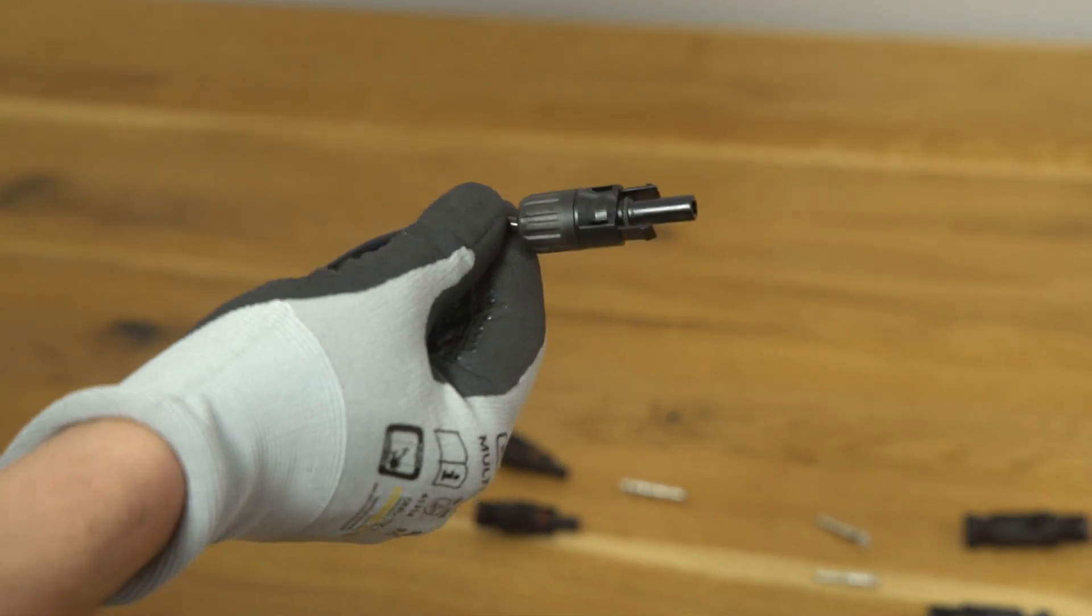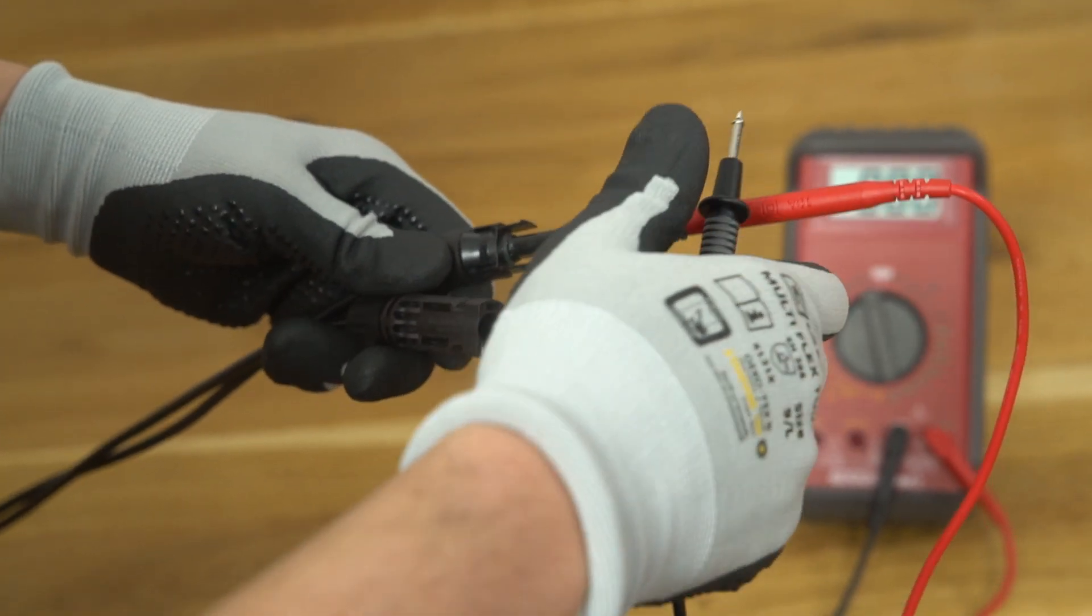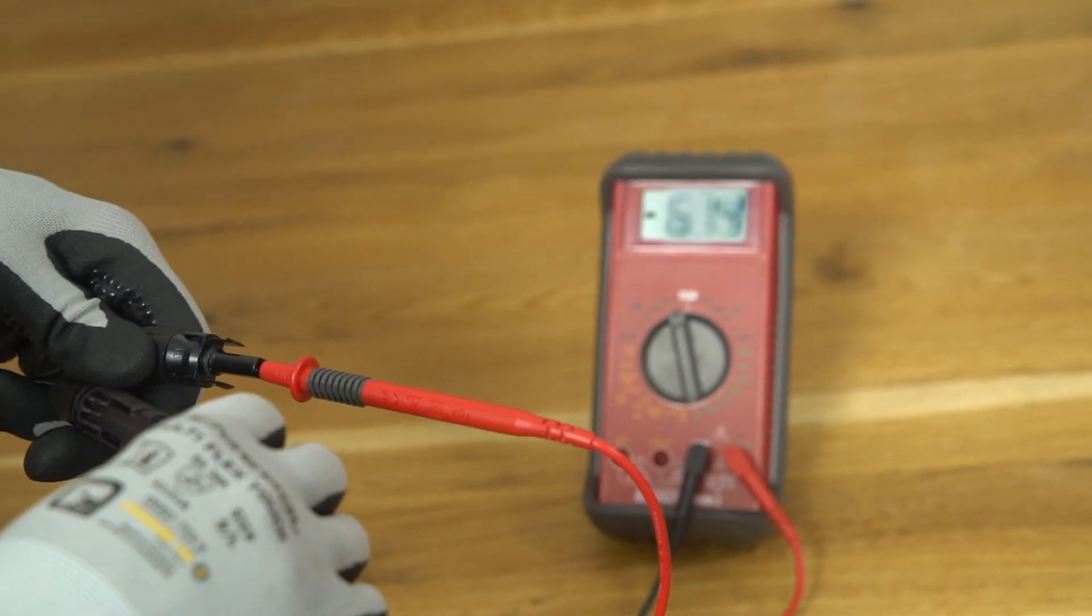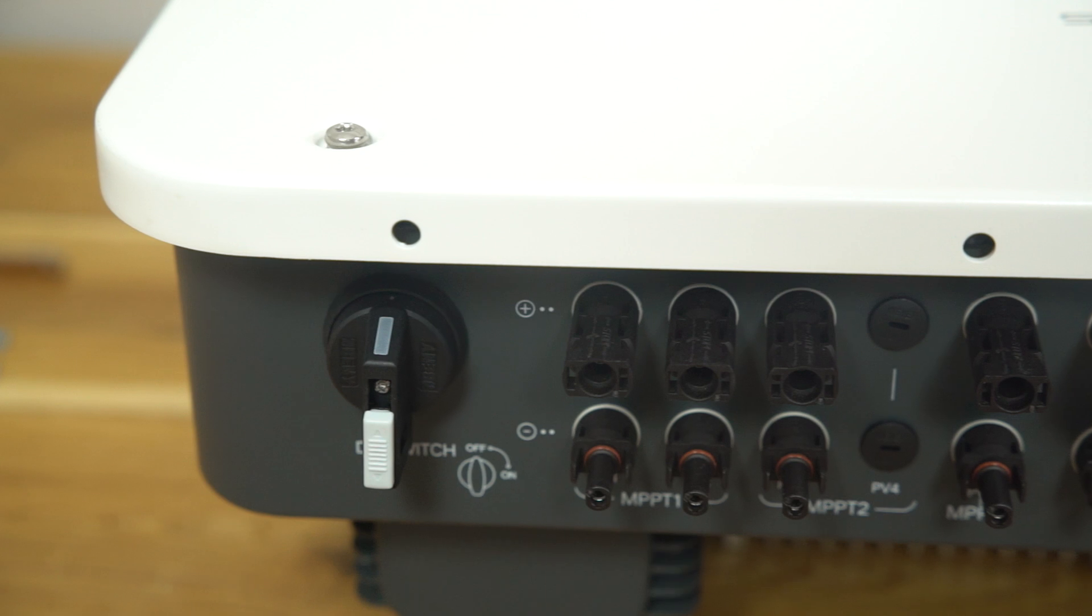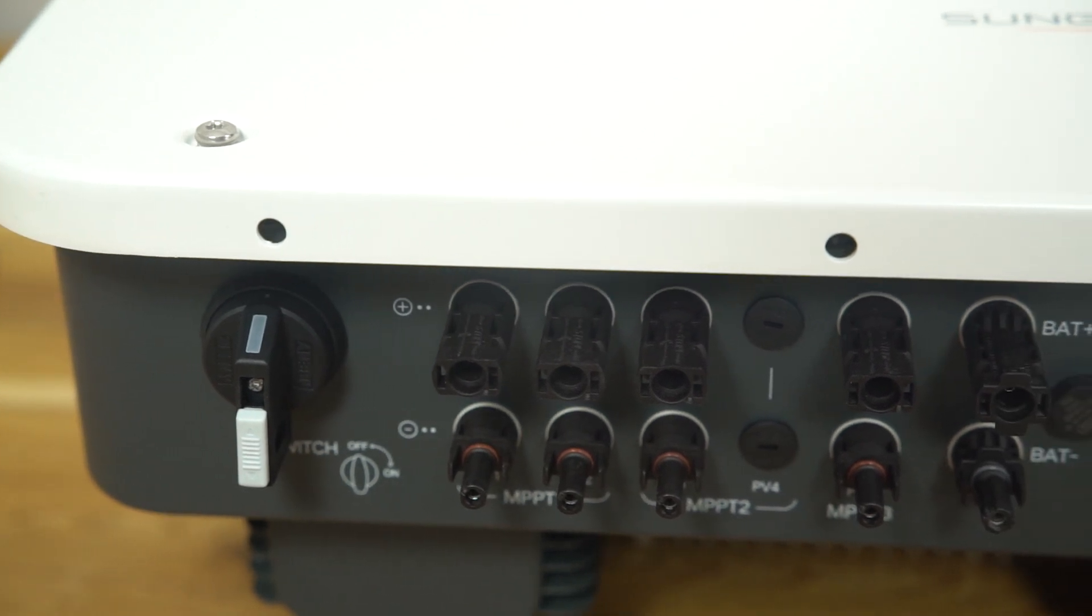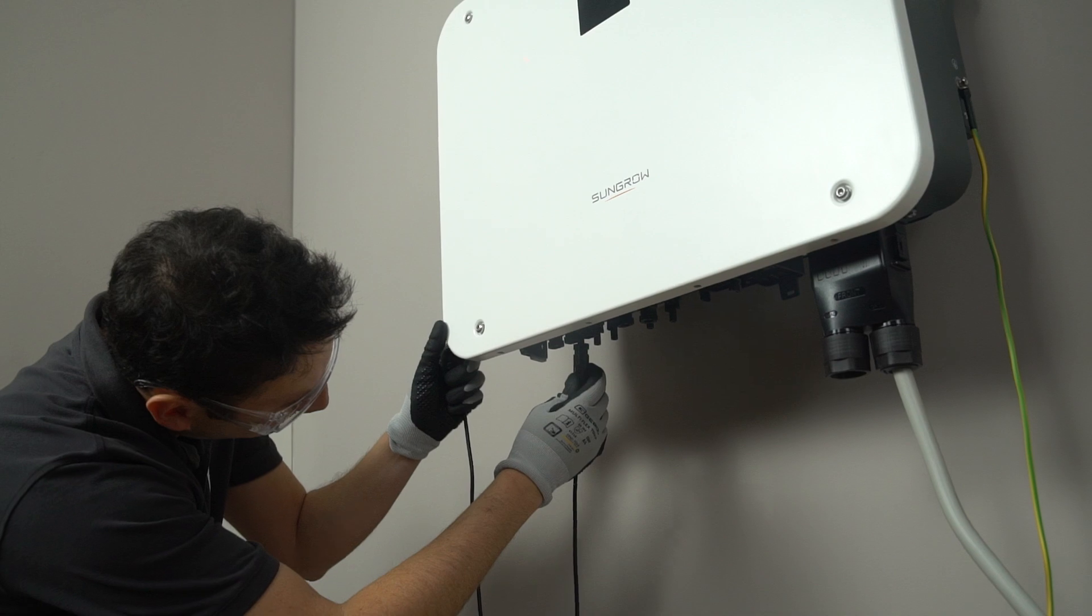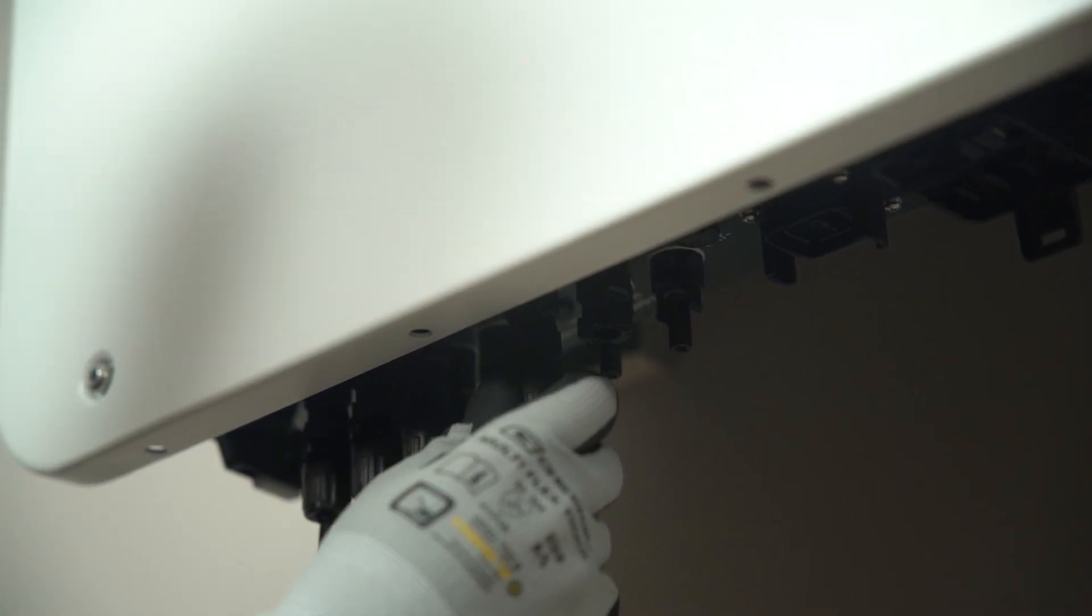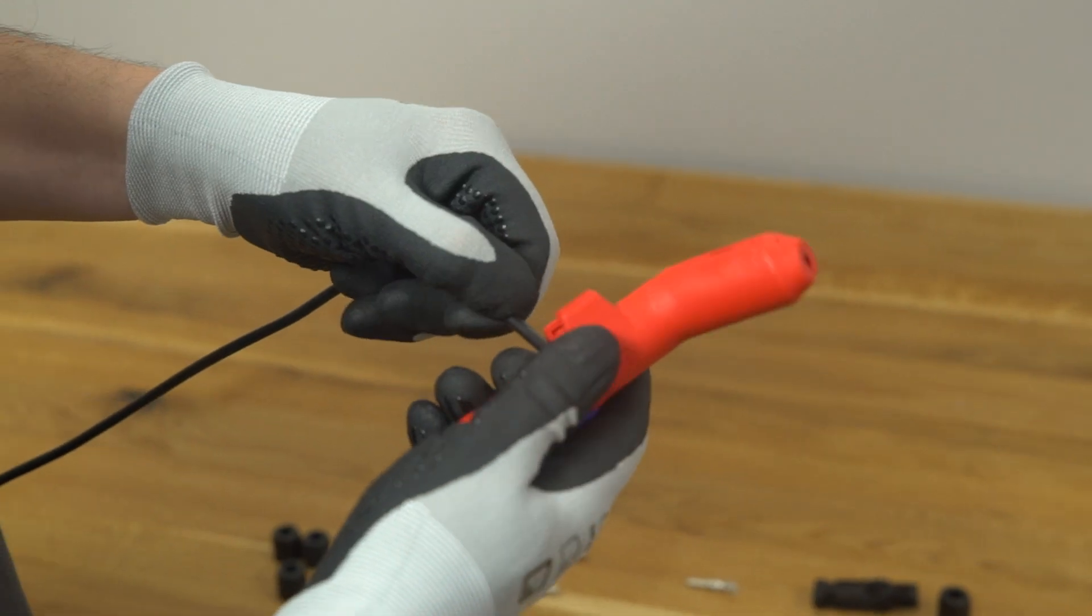Check the DC cable connections for polarity correctness. Ensure that the open circuit voltage in any case does not exceed the inverter input limit of 1000 volts. The polarity is marked on the inverter. Check again that the polarity corresponds to the imprint, then plug the connectors into the right terminals. You will hear a click when you connect the plugs to the connections on the inverter.